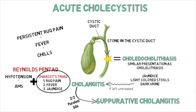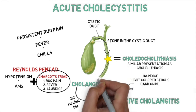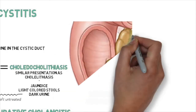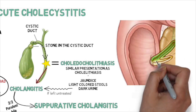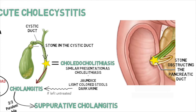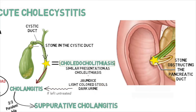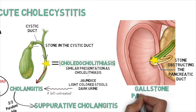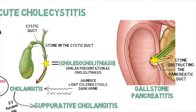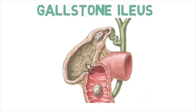Reverting back to choledocholithiasis — if the stone travels further down to the level of the pancreatic duct or just before the sphincter of Oddi, not only will the patient have choledocholithiasis, but they will also develop gallstone pancreatitis.